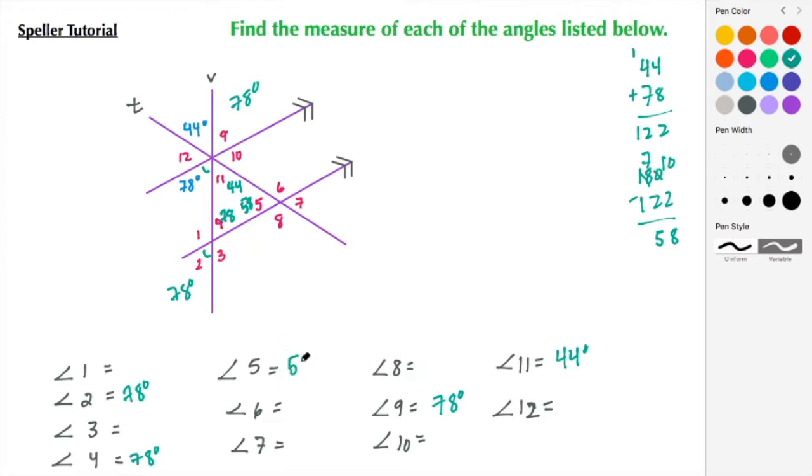So angle 5 is 58. Again, we have vertical angles, so angle 7 is also 58.